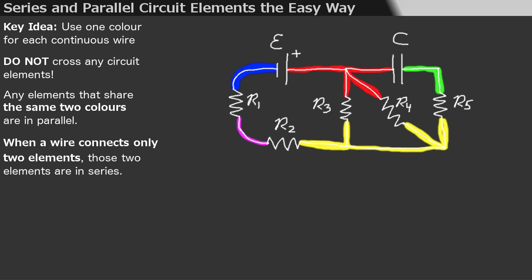Again, any elements with the same two wires or the same two colors are in parallel. We can see that R3 and R4 are in parallel because they're connected to the same pair of colors, red and yellow. But that's it. No other elements are in parallel in this circuit.